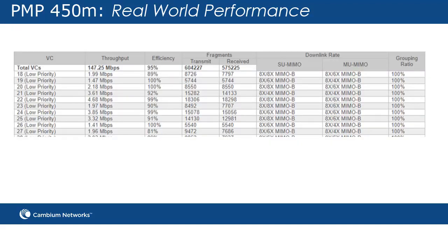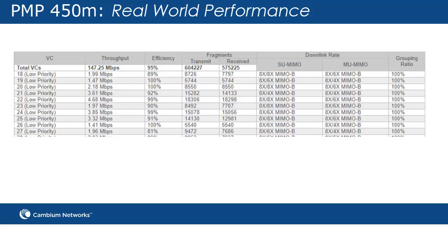Another great area to look at is the link test to multiple VCs, which can be found under the Tools menu. This view allows you to see an example of the maximum throughput of a sector. Data is sent to all VCs, forming the best groups possible and giving each VC an equal amount of over-the-air time.